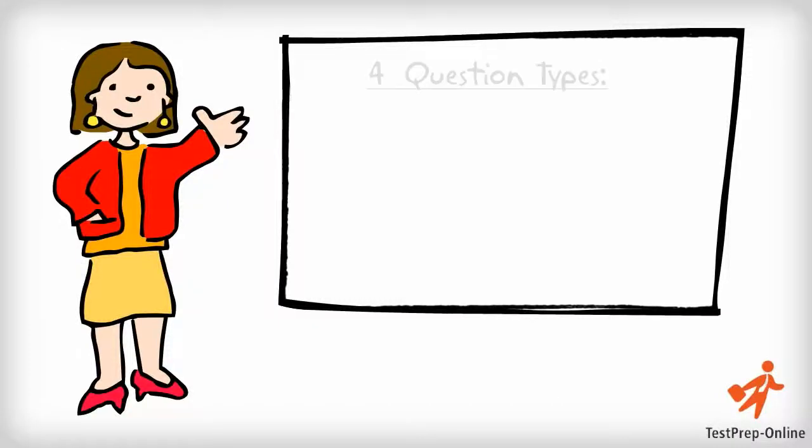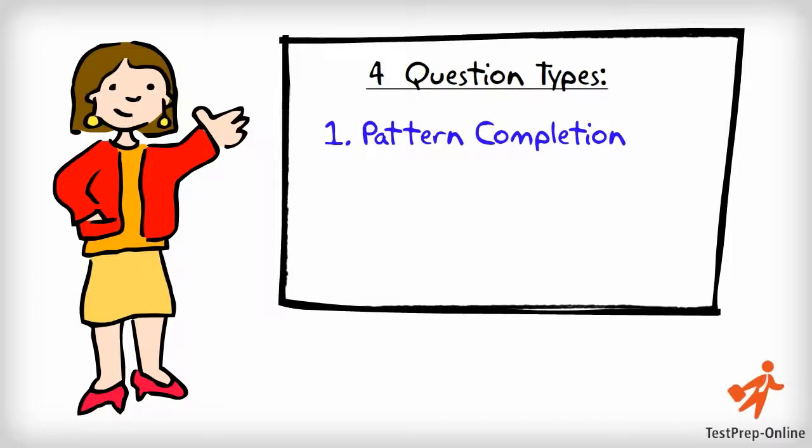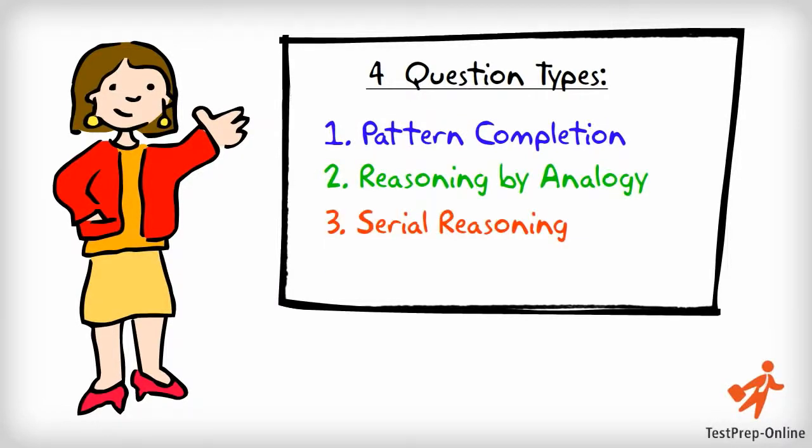The NNAT has four question types: Pattern Completion, Reasoning by Analogy, Serial Reasoning and Spatial Visualization. In this video, we will learn how to solve Reasoning by Analogy Questions.